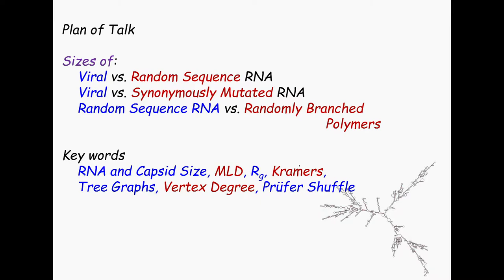The keywords you can see here: MLD, maximum ladder distance, RG, Cramer's theory of calculating RGs. I will talk about tree graphs, vertex degree distribution, and I will tell you about the Prüfer shuffle. I guess most of you don't know what it is, but it's a nice trick that we have recently used.